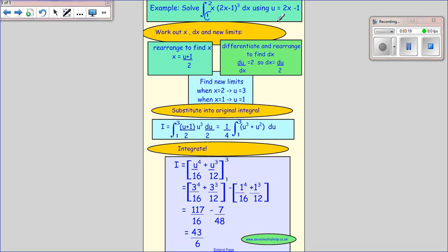We put all the different bits in here, being careful and systematic. Our x, this 2x minus 1 is u so it's u cubed, and our dx. We remember to change our limits so that becomes 3 and 1.